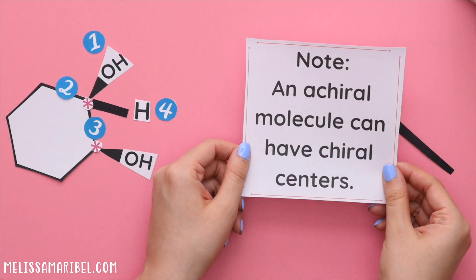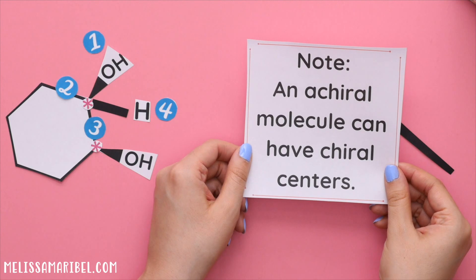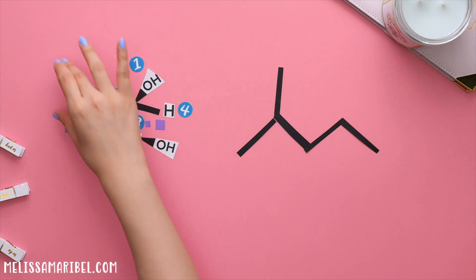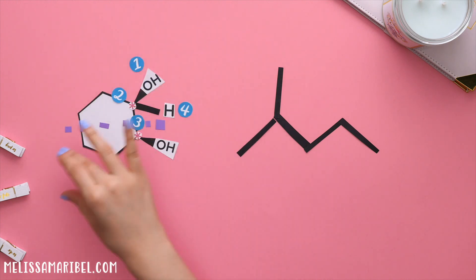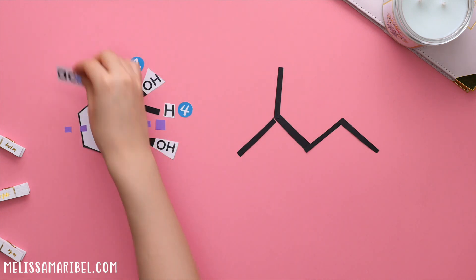An achiral molecule can still have chiral centers as shown here. This entire molecule does have a line of symmetry and both parts are the same, making it achiral.